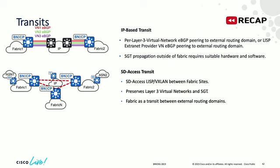There is SD Access transit, which is automated by DNA Center. You can think of it as an SD Access fabric site that interconnects other SD Access fabric sites — almost hierarchical SD Access. Each fabric site has border nodes, edge nodes, and control plane nodes, and the transit has its own dedicated transit control plane nodes (TC on the diagram) — a list database that facilitates connectivity between sites. The SD Access transit uses the same architecture as the fabric site, meaning layer-three virtual networks and SGTs are natively preserved throughout because it's all the same technology.